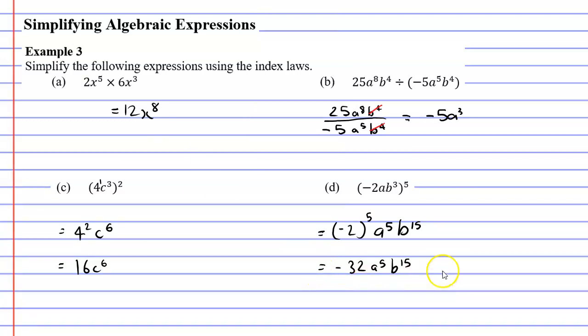I can simplify this further: negative 2 to the power of 5 gives me negative 32. So we keep A to the power of 5 and B to the power of 15, giving us negative 32A to the power of 5, B to the power of 15. I prefer this simplified expression because it just doesn't look very nice with a negative number inside brackets — this gets rid of those brackets.